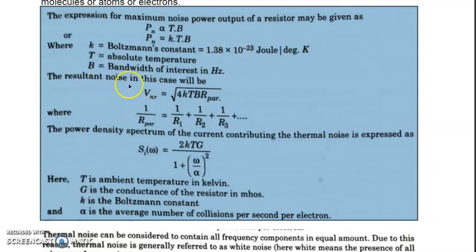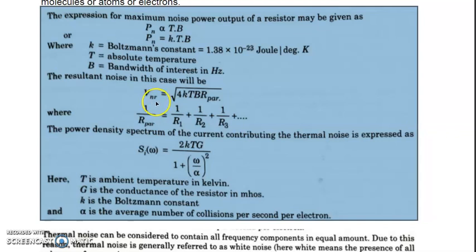The resultant noise voltage in a resistor network — where there are many different resistors R1, R2, R3 — is given as: resultant noise voltage V_NR equals the square root of 4KTB·R, where R is the net or practical resistance across the resistive network. Noise is also a form of voltage signal, hence indicated as a voltage here.